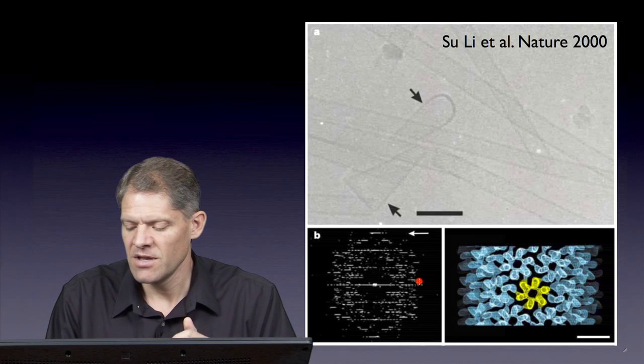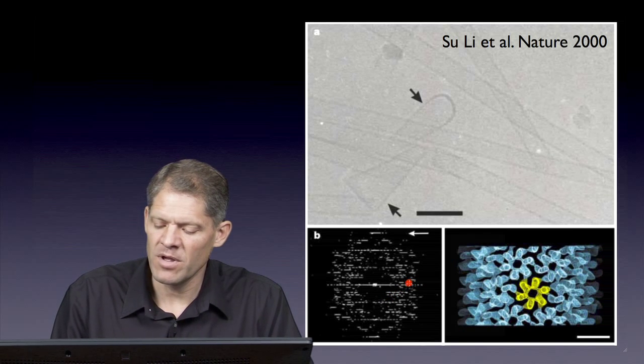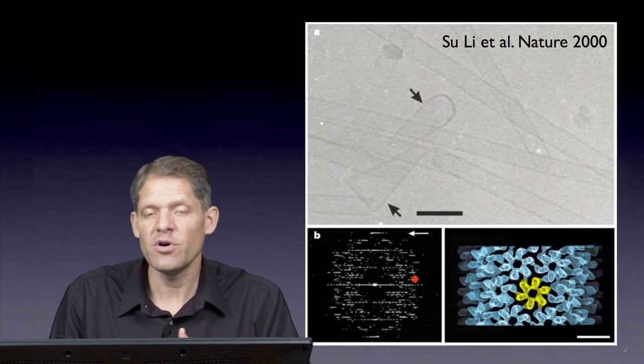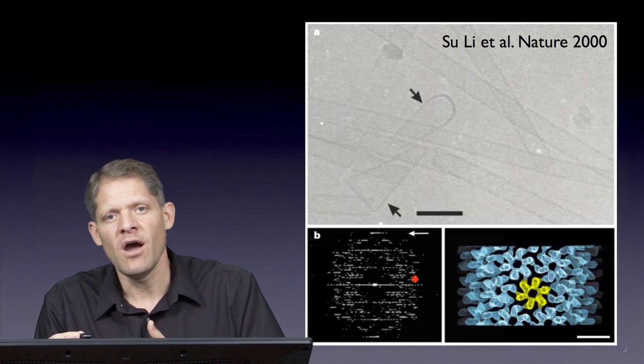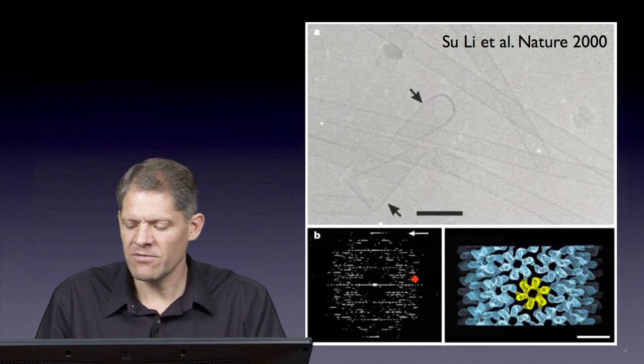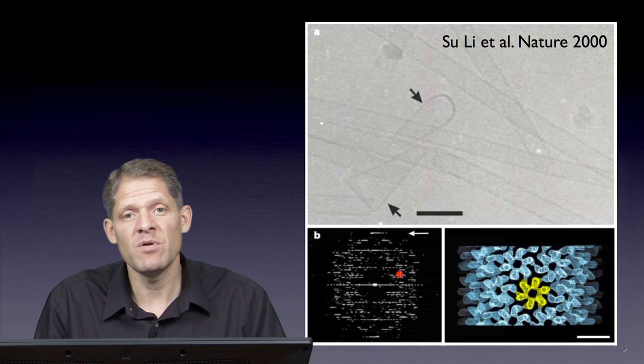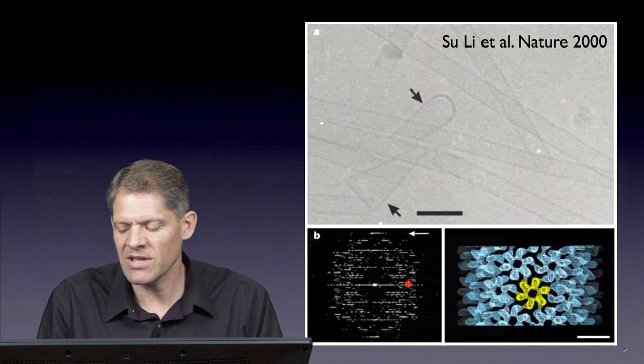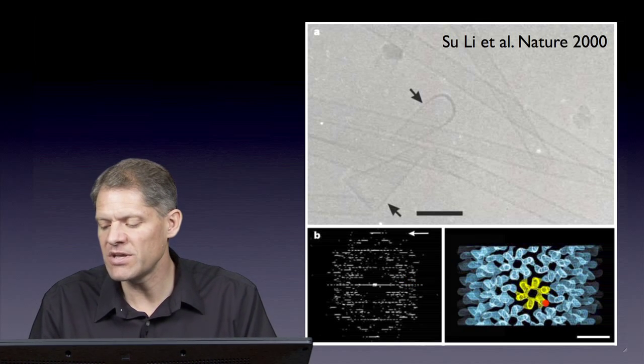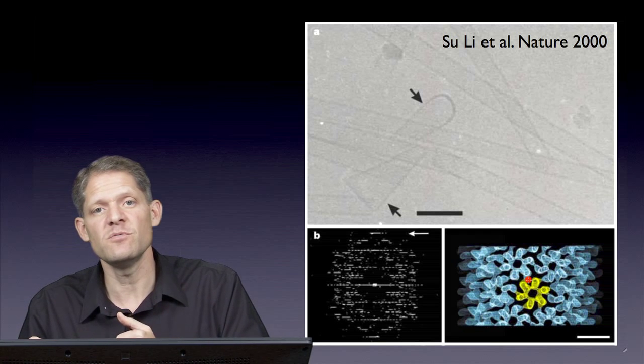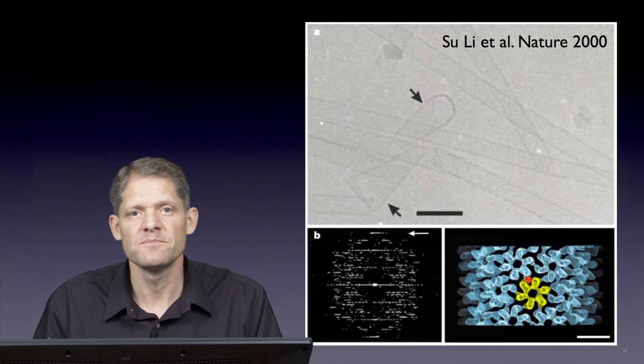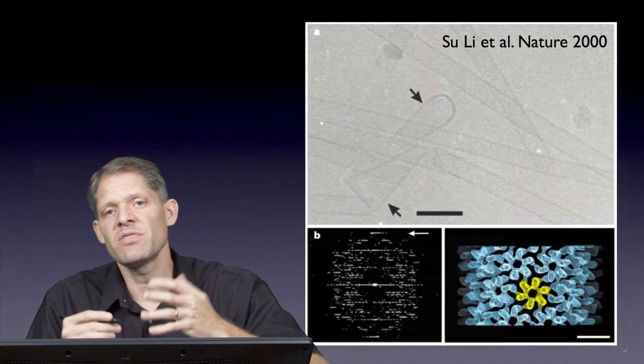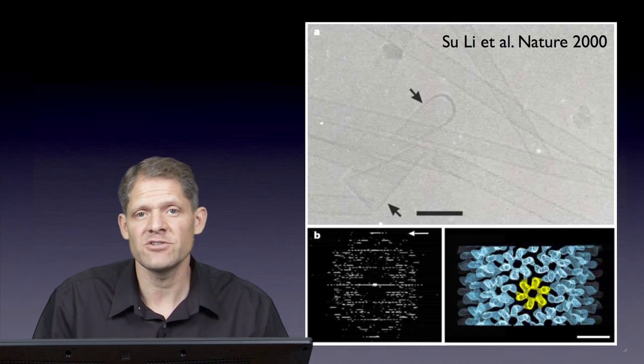And while the details of how to go from these kinds of diffraction patterns with layer lines to a three-dimensional reconstruction are beyond the scope of this presentation, nevertheless, the methods have been worked out in detail, and one can go from diffraction patterns like this to three-dimensional reconstructions of these helical tubes to very high resolution. And imaging and analyzing the helical tubes can be thought of as a variant of electron crystallography.